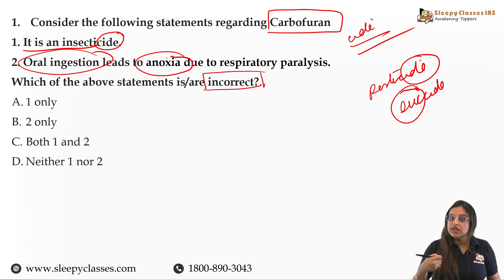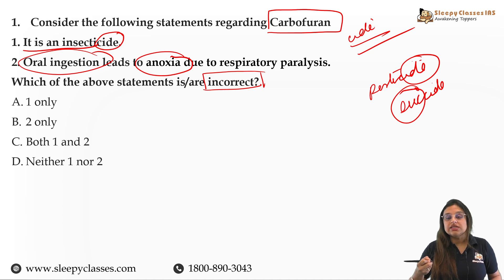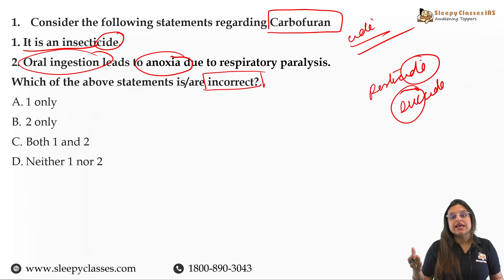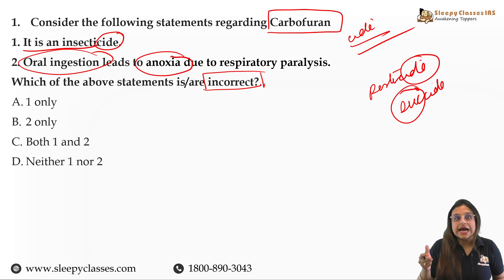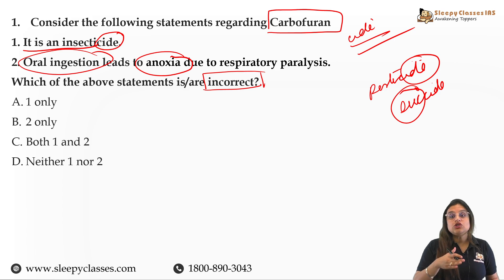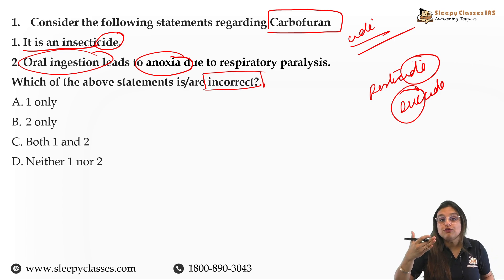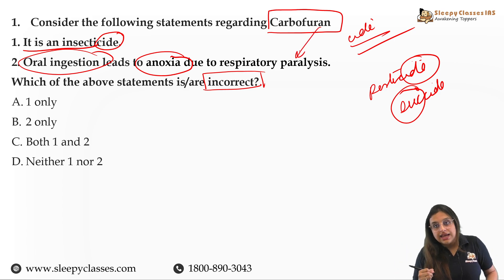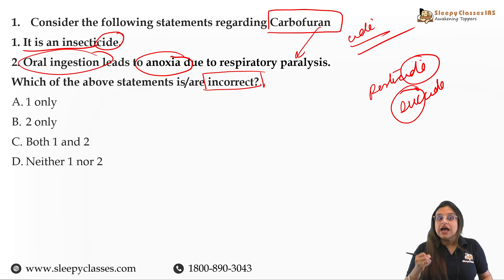Anoxia happens when oxygen decreases due to respiratory paralysis — it means your respiratory muscles are paralyzed and you cannot breathe, so oxygen decreases, which can lead to death. That is the cause of death from Carbofuran, which is what has been asked in those statements.